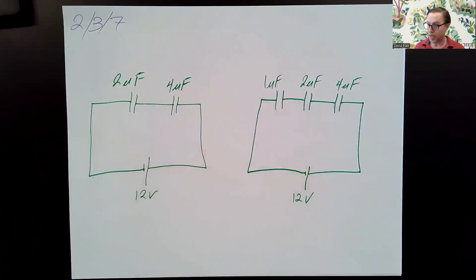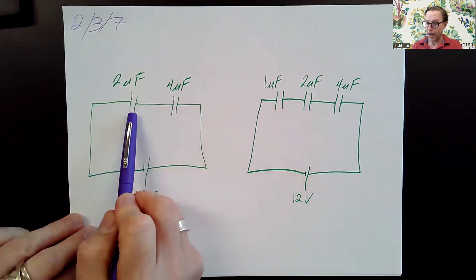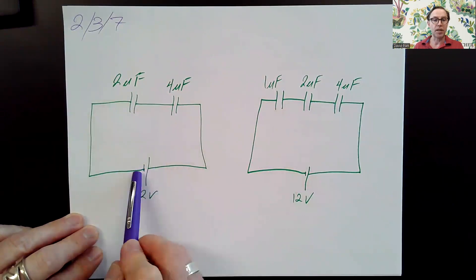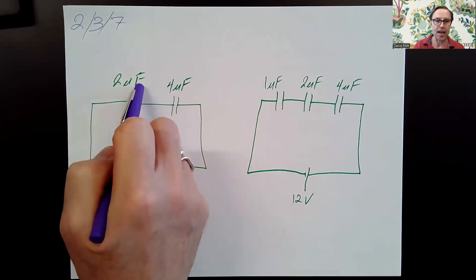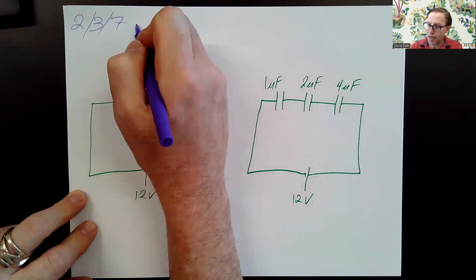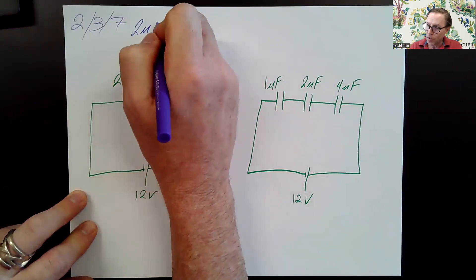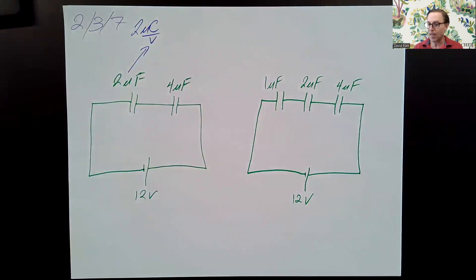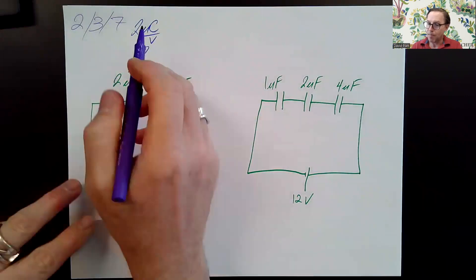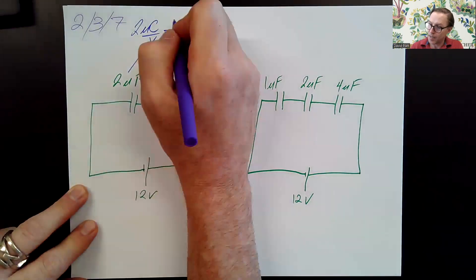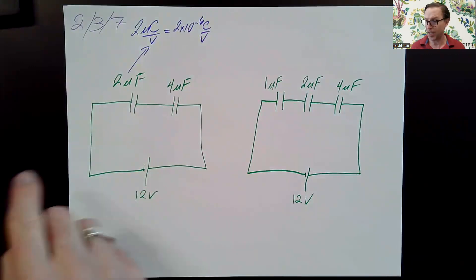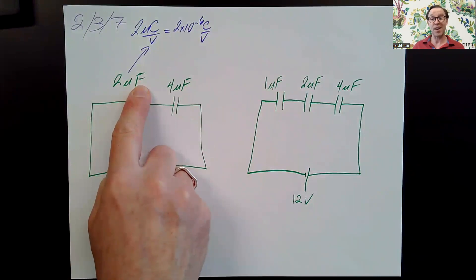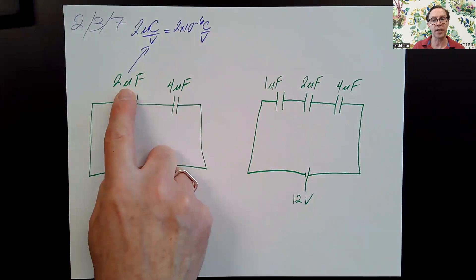A couple things to notice. Capacitors are drawn with two parallel line segments. Batteries are also drawn with two parallel line segments, but they are of unequal length. The unit for capacitance is the farad, capital F. Two microfarads is the same as two microcoulombs per volt. A farad is a coulomb per volt, and micro means times 10 to the minus sixth. So the quantity capacitance is measured in the unit farads, and one farad is a large amount of capacitance. So usually capacitors are numbers of micro, or millionths, of farads.